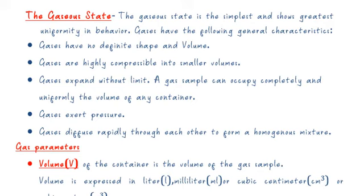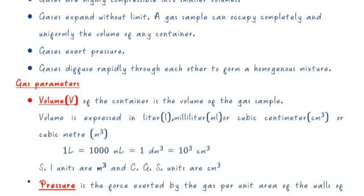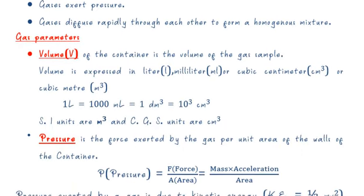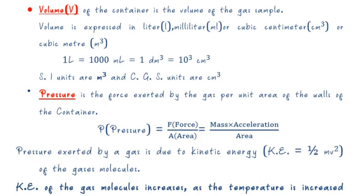The measurable parameters of gases are volume, pressure, temperature, and mass. Volume of the container is the volume of the gas sample. Volume is expressed in liters, milliliters, cubic centimeters, or cubic meters. One liter equals 1000 milliliters, or 1 dm³, or 1000 cm³. The SI unit of volume is m³ and the CGS unit is cm³.